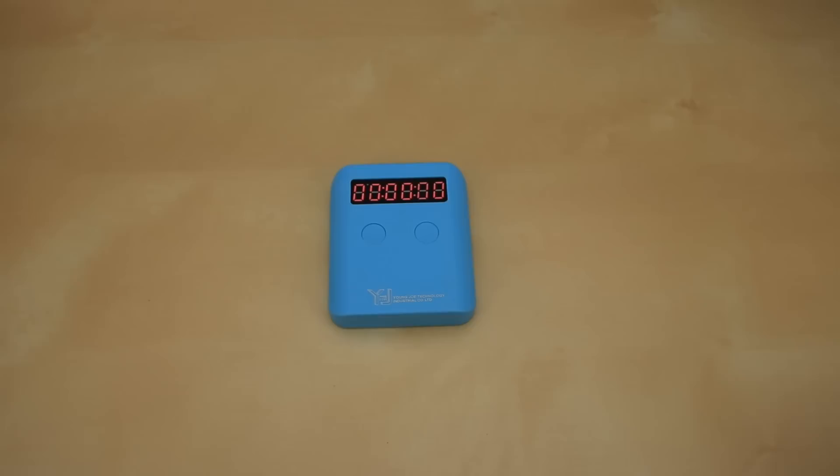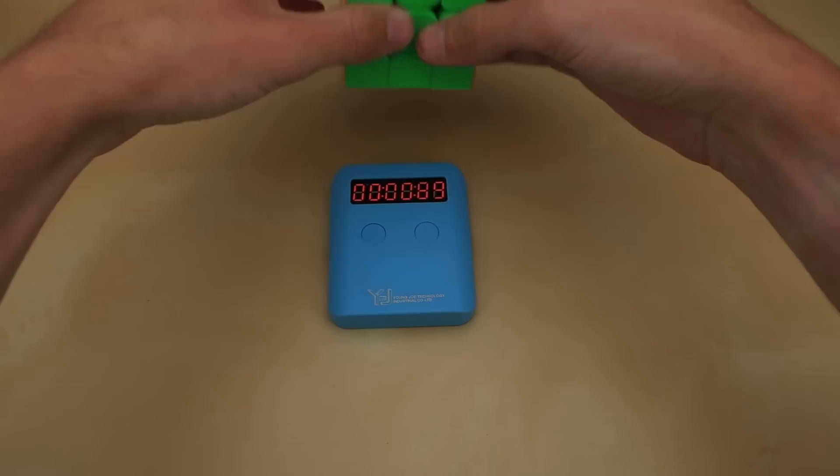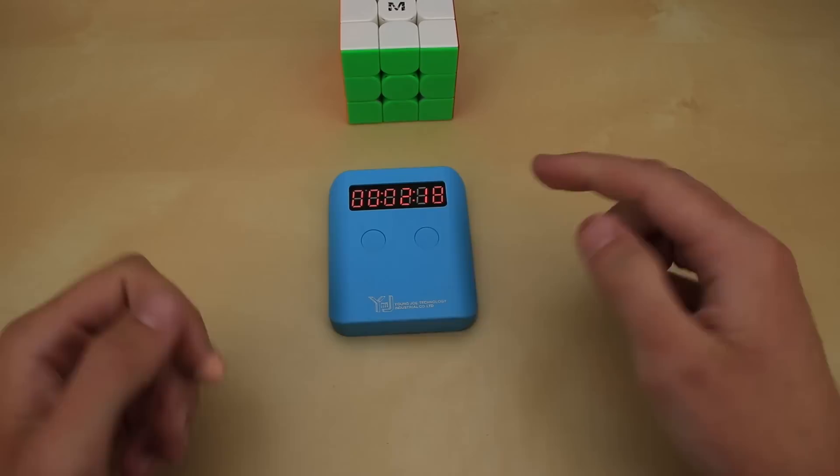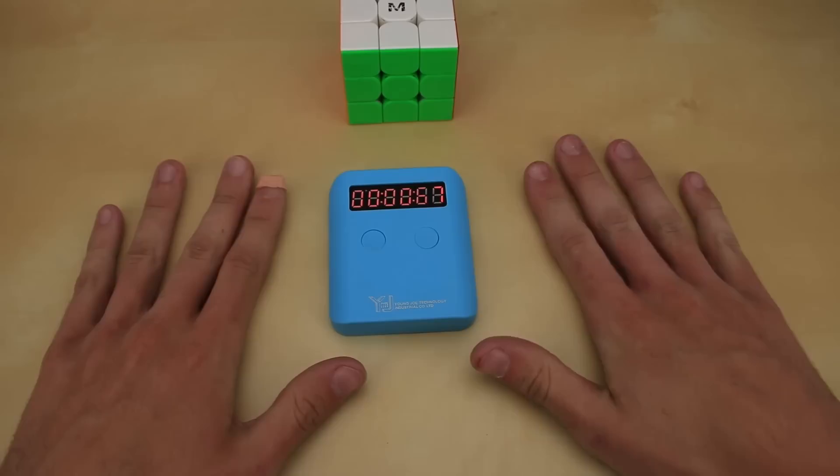It has a really obnoxious sounding buzzer. We can set it down, get our cube, scramble it up, set it here, put down our hands, solve the cube and stop it. There we go, 2.18 seconds. Other than resetting this timer with this button on the right, the entire process doesn't require touching the timer at all.